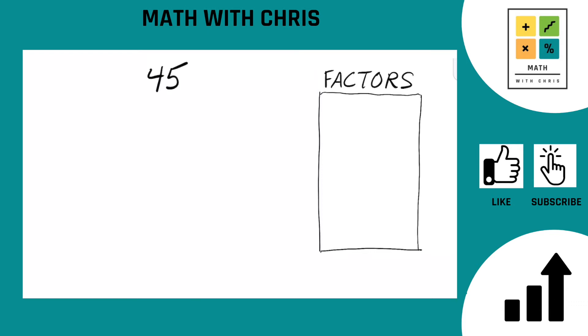So the first thing we always want to do when we find factors of any number is bank the two easiest ones. That's of course 1 and 45, the number itself.